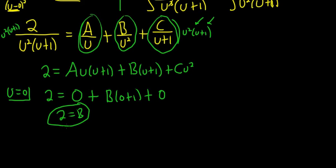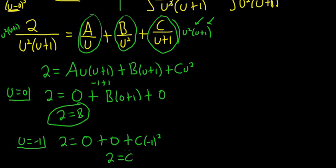Let's see, what else can we plug in to make things go away? It looks like negative 1 would work. So if u equals negative 1, we get 2 equals, so the first term goes away, we get 0, because negative 1 plus 1 is 0. The second term goes away, so plus 0. And we're left with C times negative 1 squared. Negative 1 squared is 1, so we get 2 equals C, so C is equal to 2.